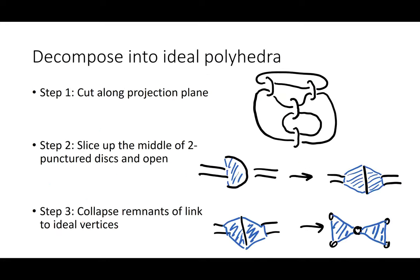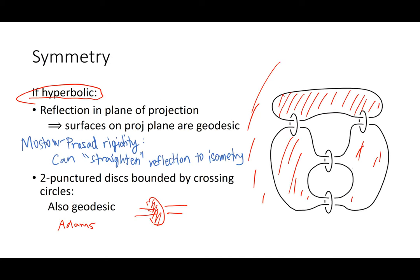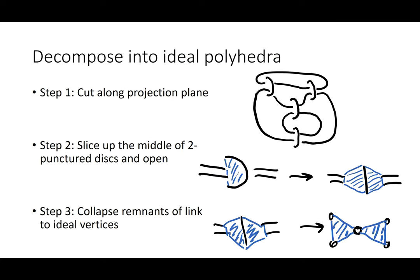We've got two sets of geodesic surfaces, so we're going to cut along those and turn this into a totally geodesic polyhedron — first combinatorially, then geometrically. The decomposition into an ideal polyhedron has three main steps. The first step is to cut in half: just slice along the projection plane. This yields two halves; I've only drawn the top half, which is the same as the bottom up to reflection.